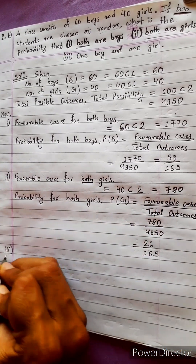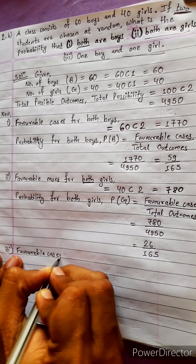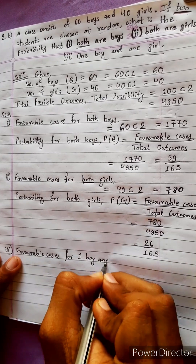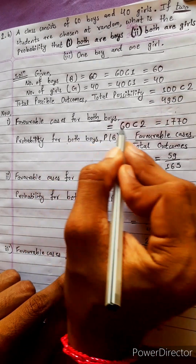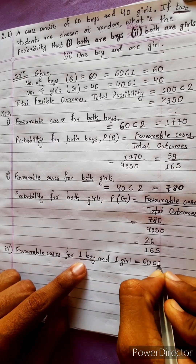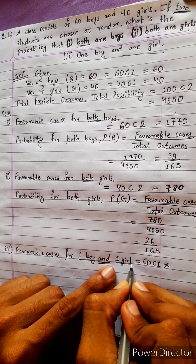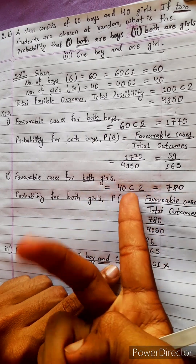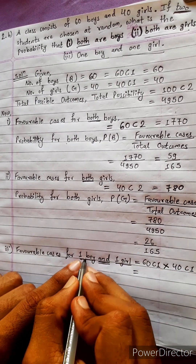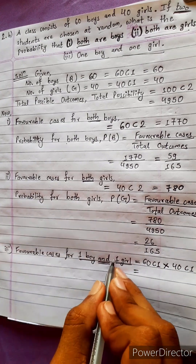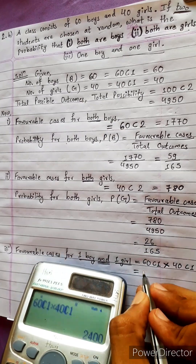Now the third question — this is a very tricky question. One boy and one girl. Favorable cases for one boy and one girl: for one boy we do 60C1, and since 'and' means multiply, for one girl we do 40C1. So favorable cases equal 60C1 multiplied by 40C1, which is 2400.